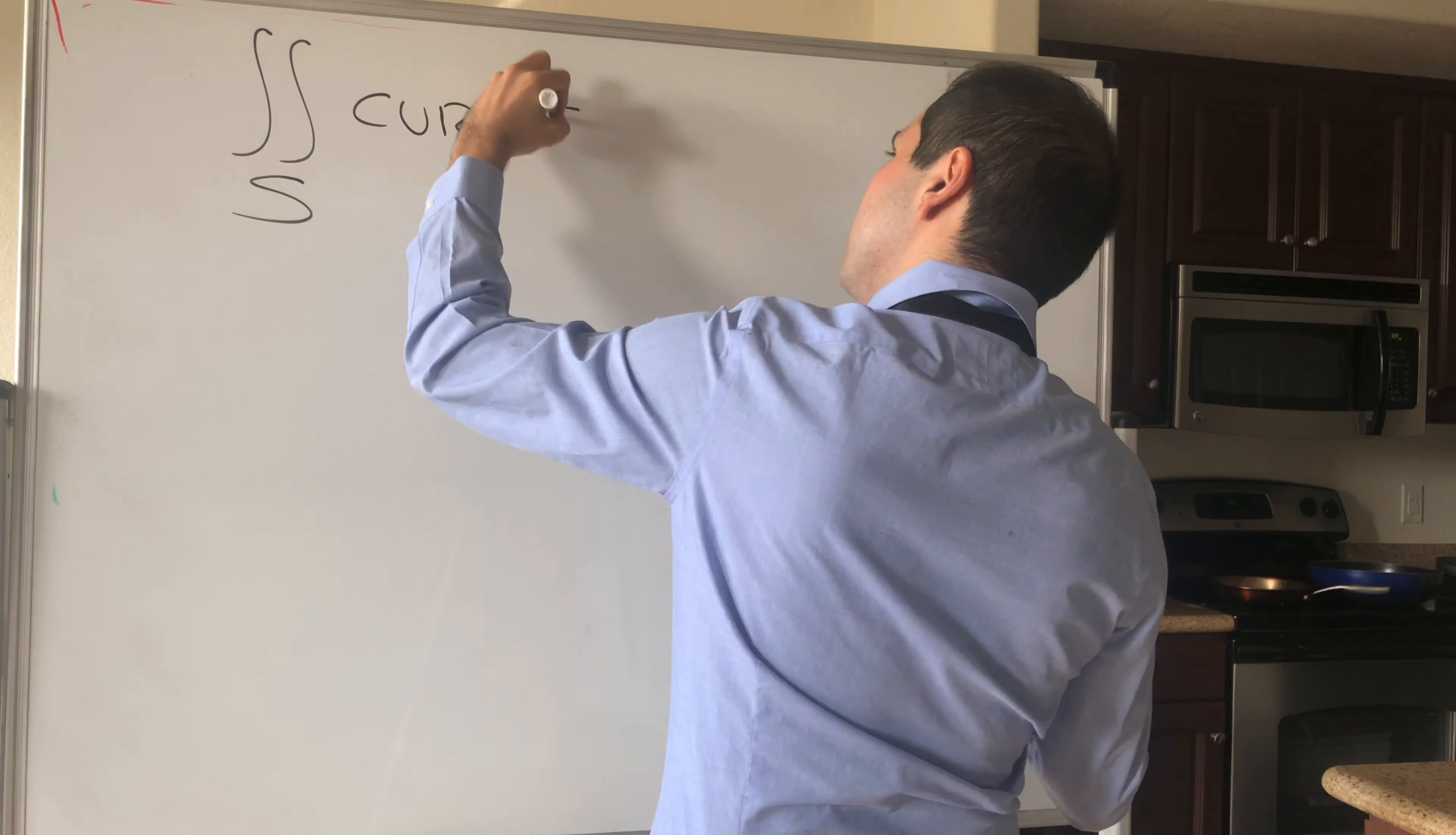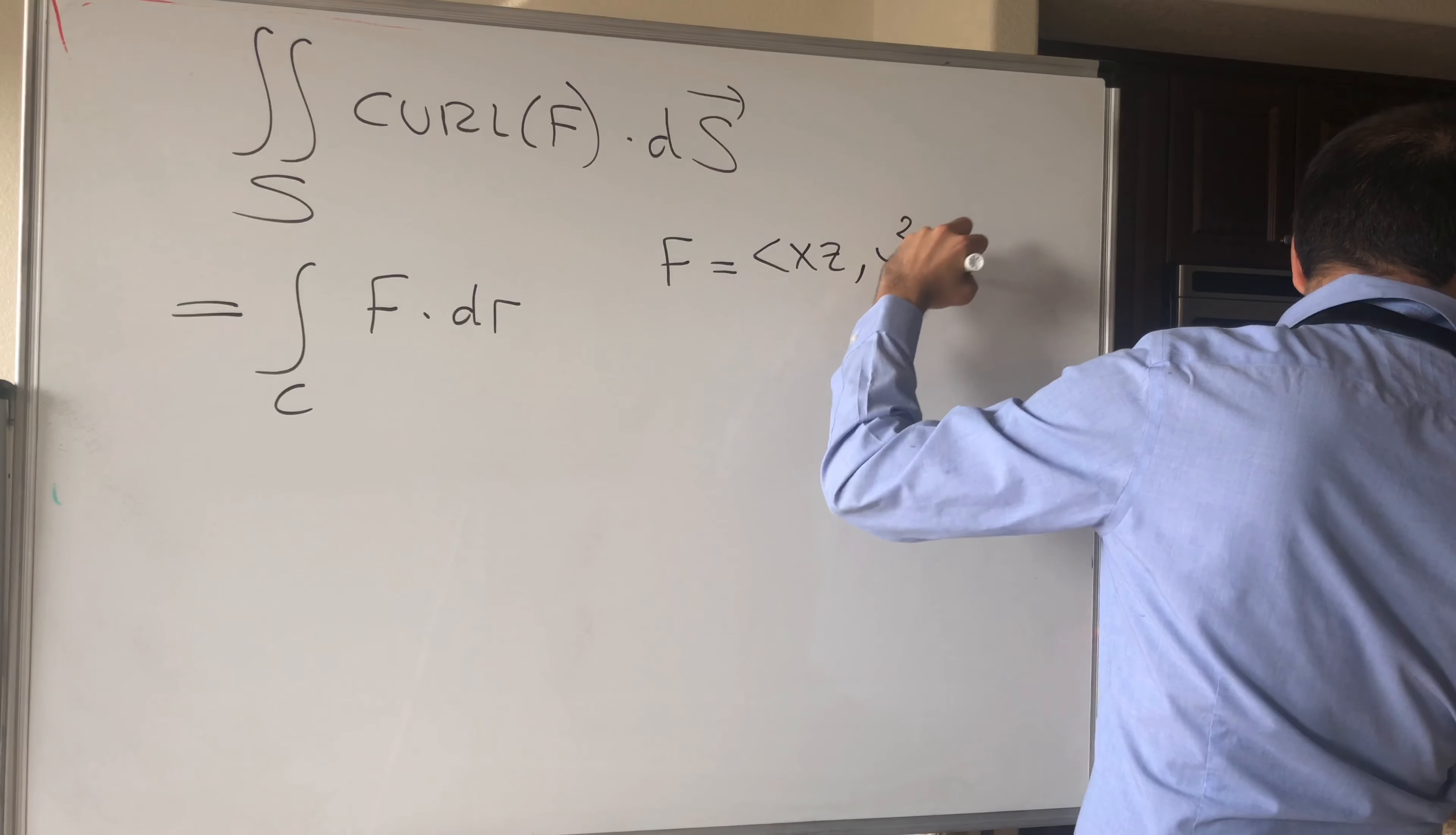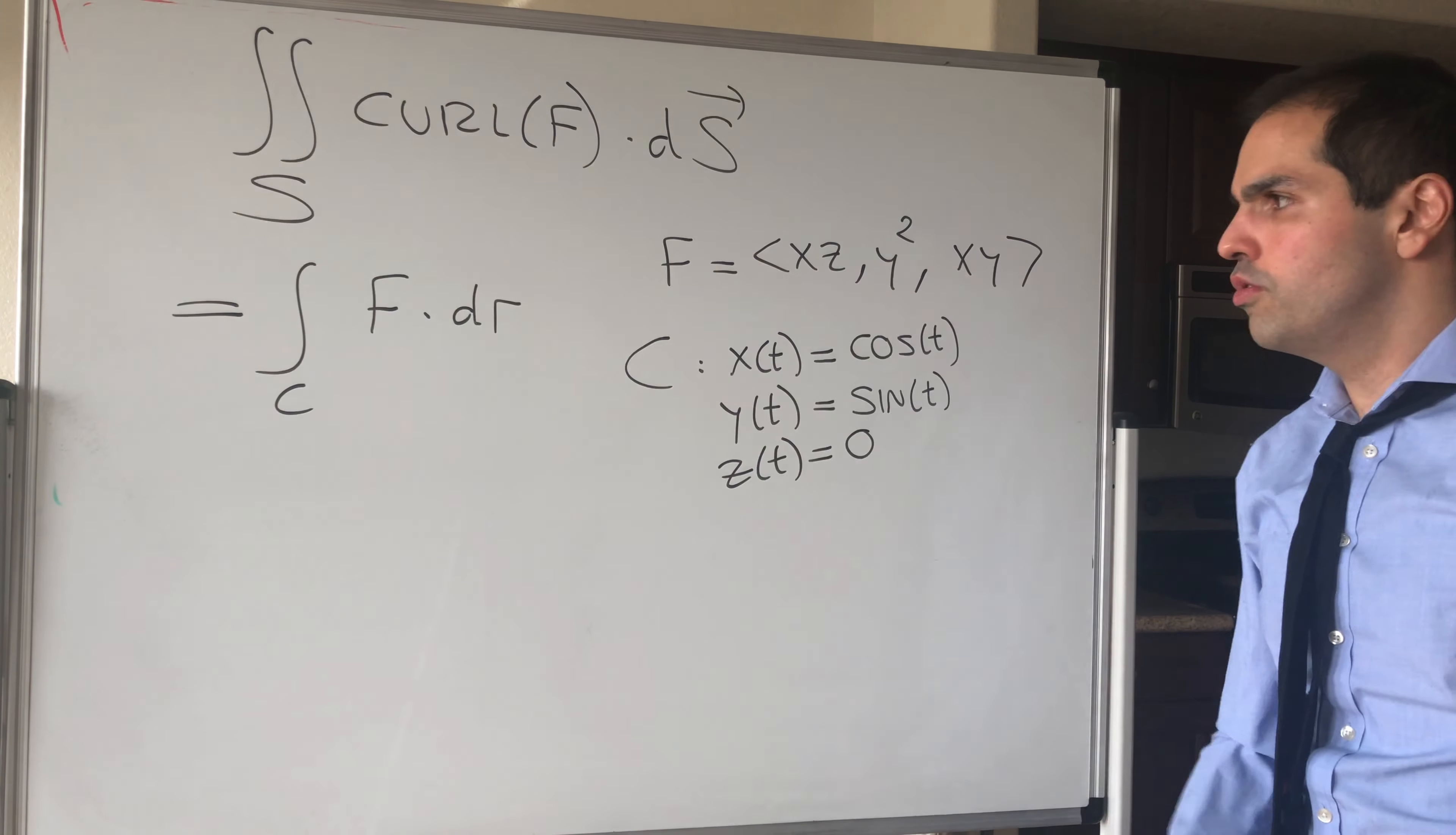The line integral of F dr, where, again, F was a vector field xz, y squared, and xy. And remember, C was parameterized just as follows, x of t equals cosine t, y of t equals sine of t, and then z of t equals 0, and t from 0 to 2 pi.